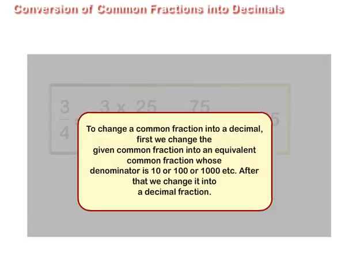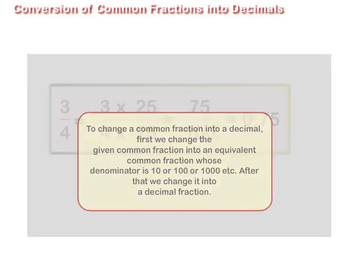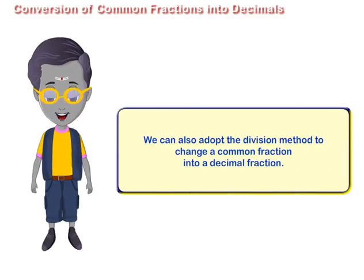Thus, to change a common fraction into a decimal, first we change the given common fraction into an equivalent common fraction whose denominator is 10 or 100 or 1000, etc. After that, we change it into a decimal fraction. We can also adopt the division method to change a common fraction into a decimal fraction.